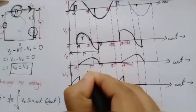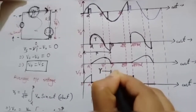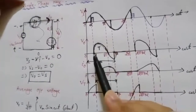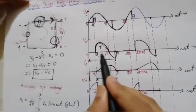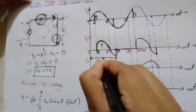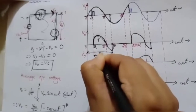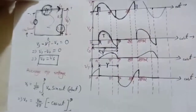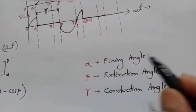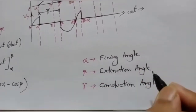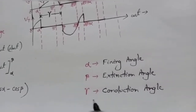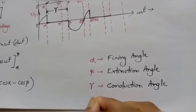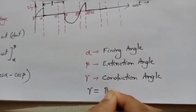We can identify another angle called gamma, which is the conduction angle. Gamma represents the angular interval from alpha to beta during which the thyristor is conducting and we obtain output voltage. Alpha is the firing angle (where the thyristor turns on), beta is the extinction angle (up to which the output voltage extends into the negative half cycle), and gamma is the conduction angle. Therefore, gamma = beta − alpha.